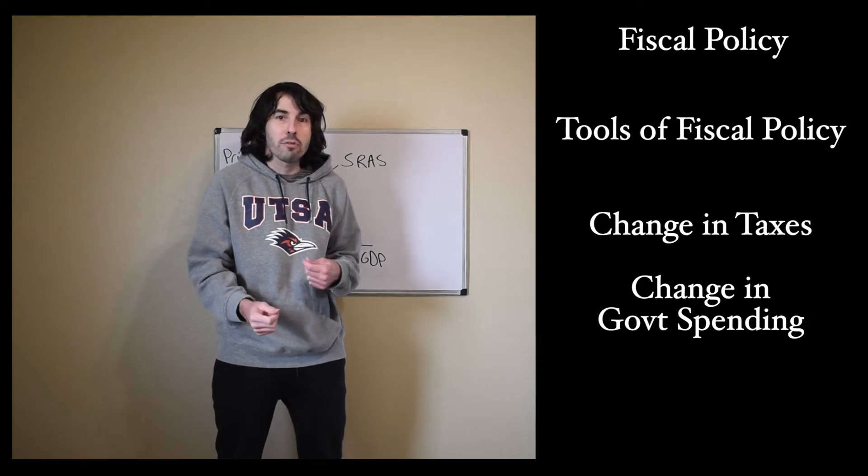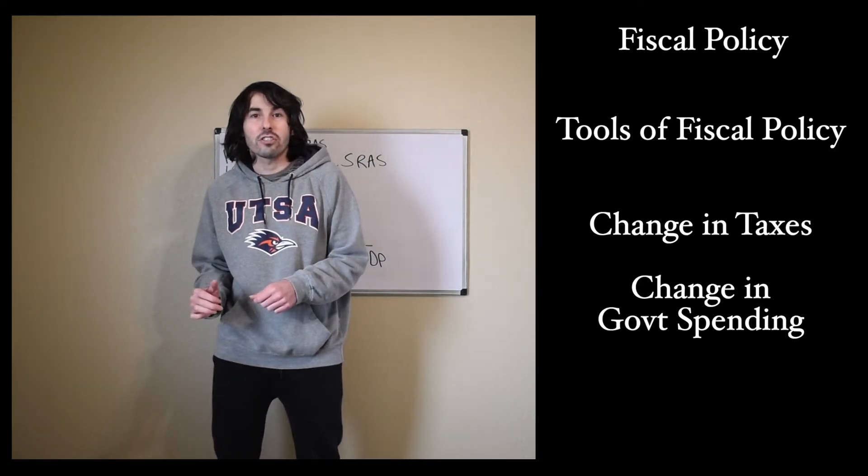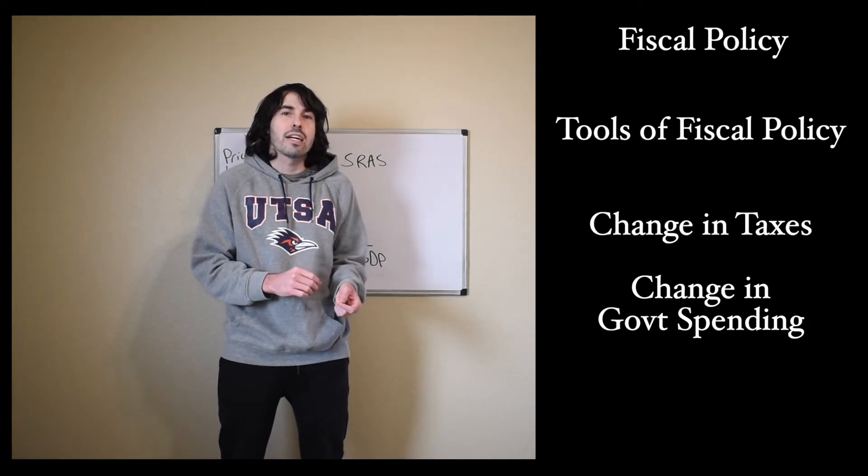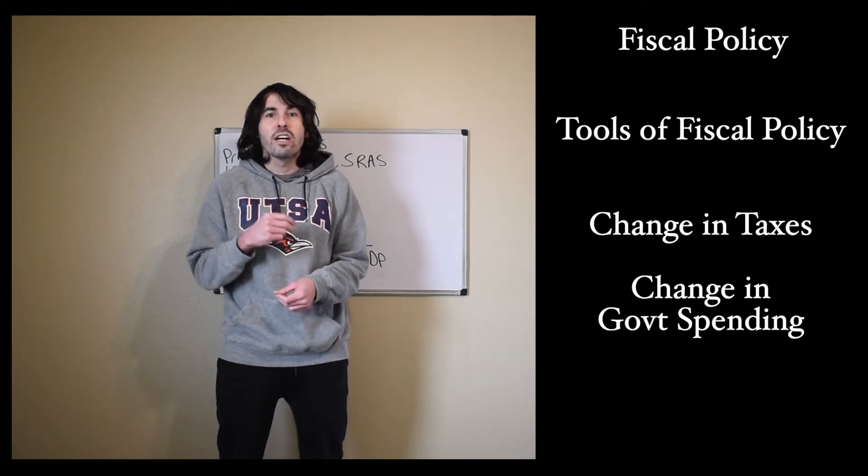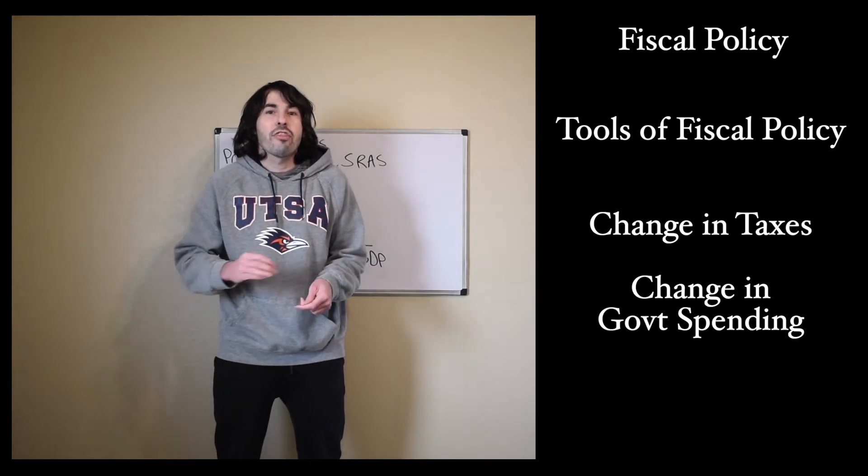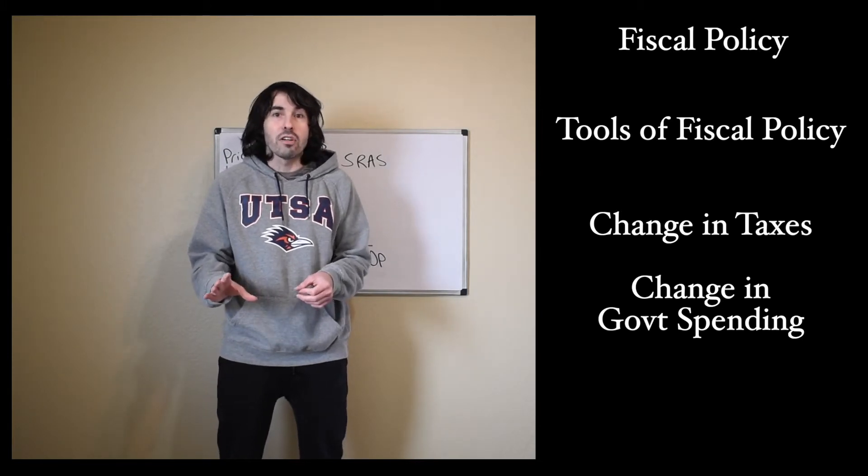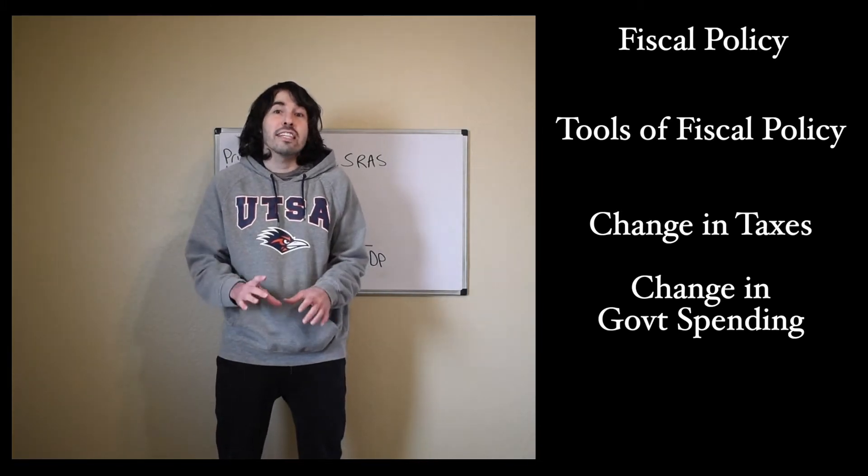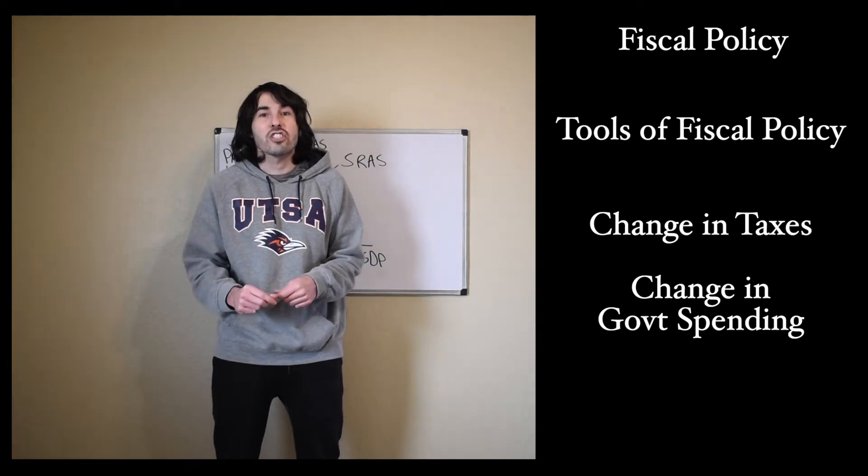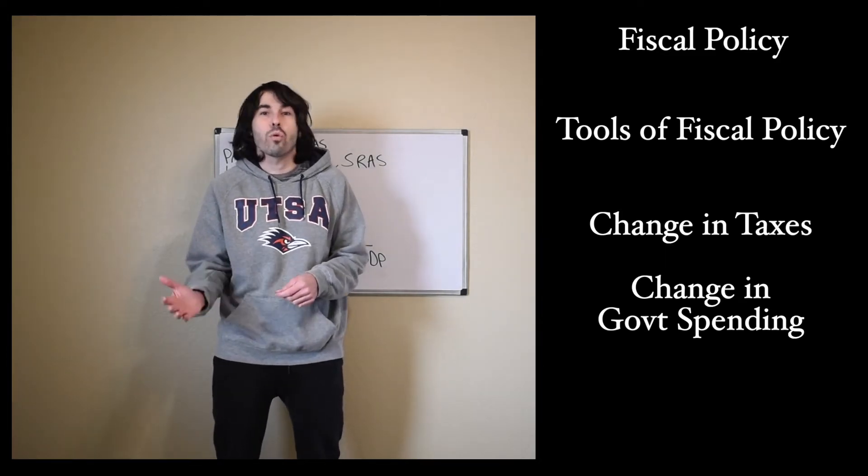There is both discretionary fiscal policy and non-discretionary fiscal policy. We've talked a bit about non-discretionary fiscal policy before. Those are your transfer payments, things like unemployment benefits and Social Security. Discretionary fiscal policy is going to be new legislation, where Congress writes up new legislation in order to change taxes or spending.